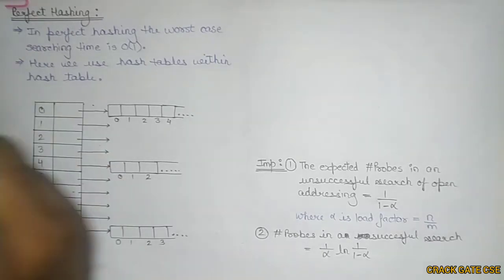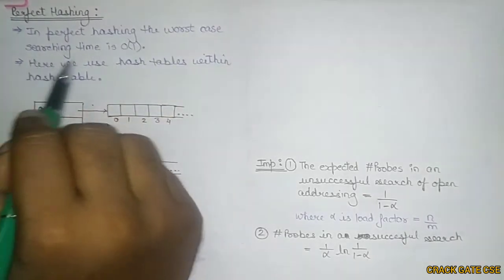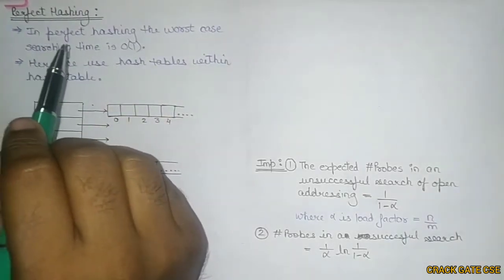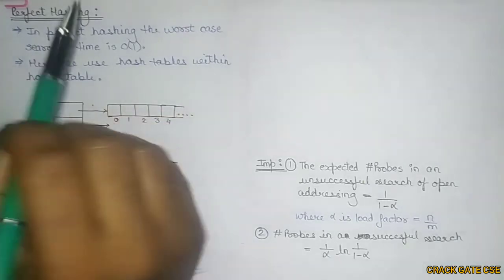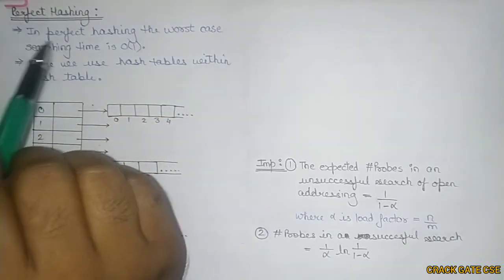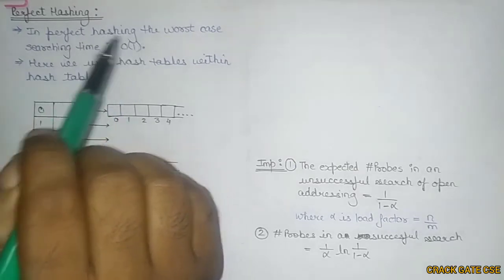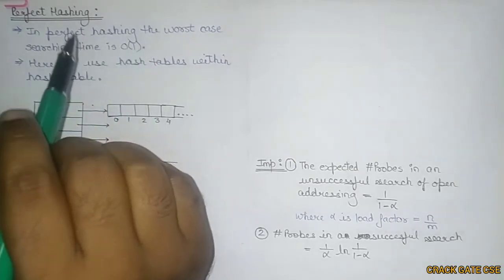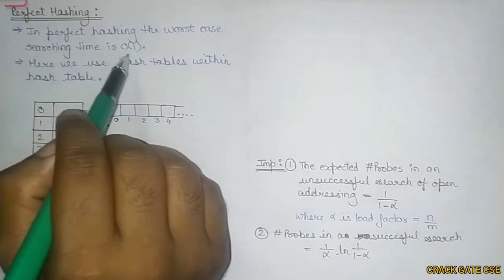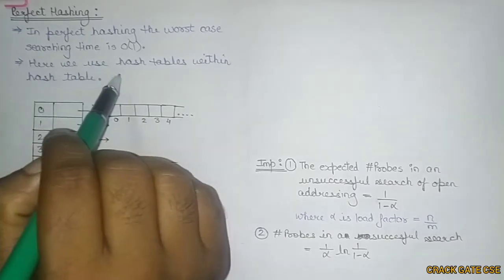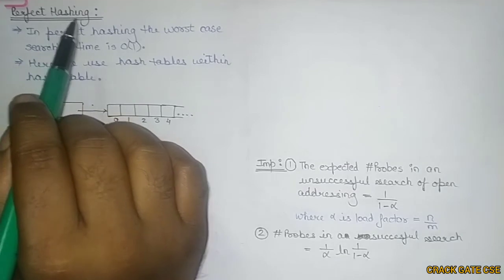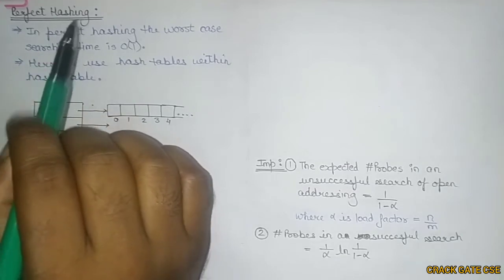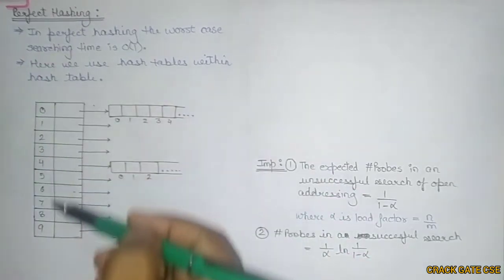Now let's start with perfect hashing. In perfect hashing, the worst case searching time is O(1), unlike the other collision resolution techniques and probing methods we used. Perfect hashing is the only one which claims to have searching time as constant, that is O(1). Here we will be using hash tables within hash tables.